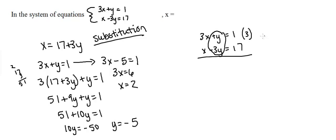So multiplying every term by 3, I'm going to get 9x plus 3y equals 3. And then for my second equation, I have x minus 3y equals 17. And now I'm going to add these two equations together.